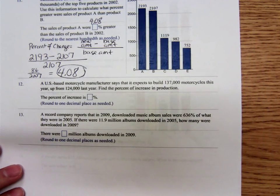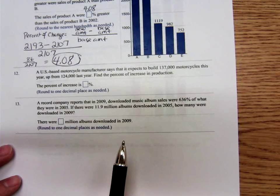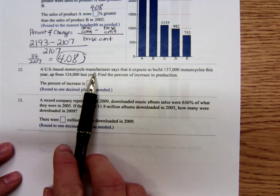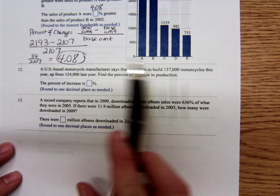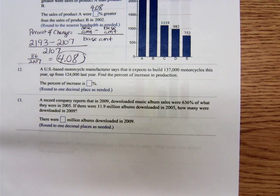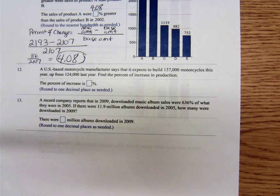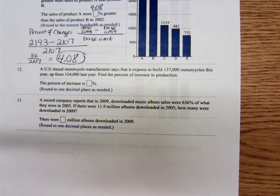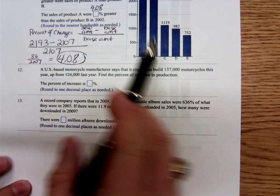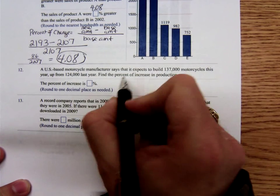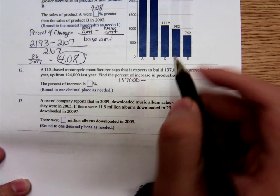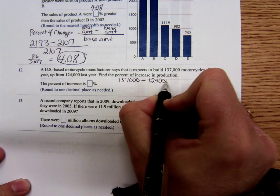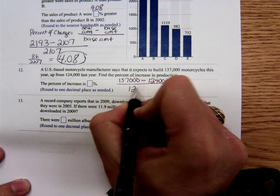Time I think to do one more of these, number 12. A US-based motorcycle manufacturer says that it expects to build 137,000 motorcycles this year, up from 124,000 last year. Find the percent of increase in production. Well the percent of increase is just this percent of change, so it's that same formula. Only this time the new amount is 137,000, the base amount 124,000, divided by 124,000.